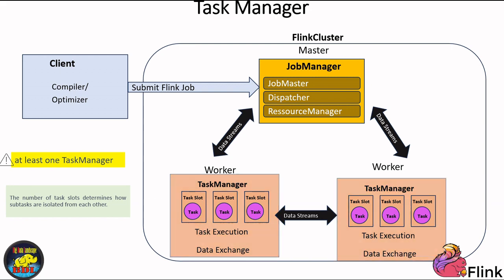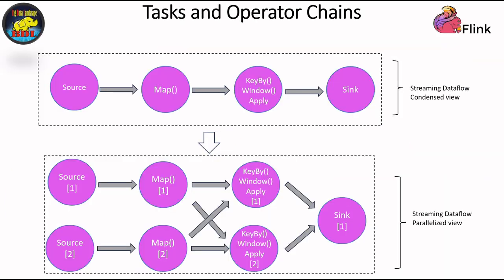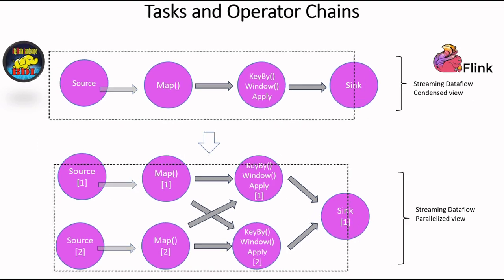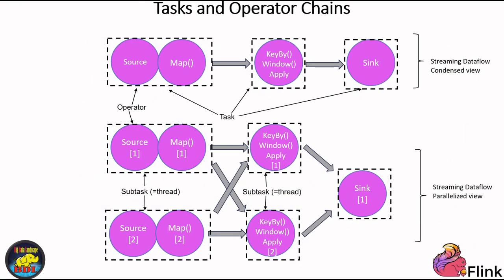This chaining optimizes performance by reducing thread-to-thread handover overhead. When Apache Flink processes tasks across multiple computers, instead of handling each tiny part of a task separately, it groups them together into larger tasks. Think of it like solving a big puzzle by first putting together smaller pieces. Each of these grouped tasks is assigned to a single worker, like a specialized team member, responsible for doing that specific task. This approach is super-efficient because it reduces the need for constant communication and sharing between different workers.